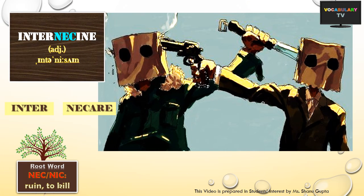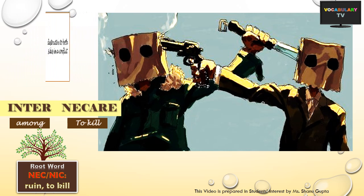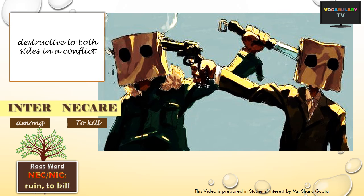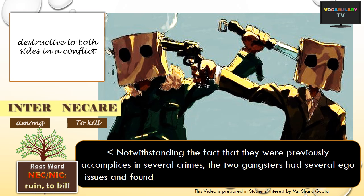Finally, let's discuss the word internecine. The word is derived from the prefix inter meaning among and neker meaning to kill. So internecine literally means to kill among and describes a state involving conflict within a group – something mutually destructive or destructive to both sides in a conflict. As you can see in the picture, one person is piercing a dagger through his opponent's head and the second is firing a shot in the first person's head – this conflict is mutually destructive, that is to say it is internecine. For example: notwithstanding the fact that they were previously accomplices in several crimes, the two gangsters found themselves engaged in an internecine conflict.